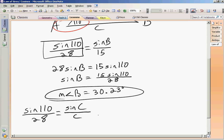The problem is there's two variables. But fortunately, in any triangle, if I know two angles, I can figure out the third. So angle A is equal to 110 degrees. Measure of angle B is equal to 30.23 degrees. If I add those together, I get 140.23 degrees.